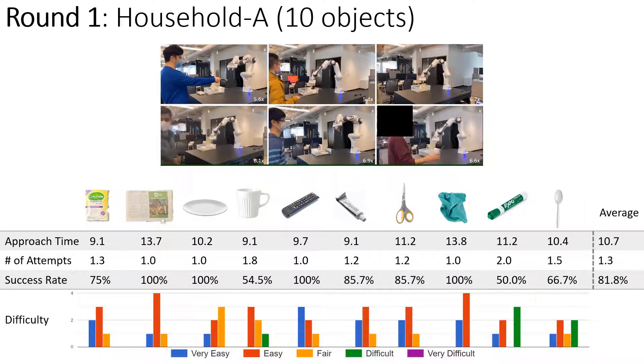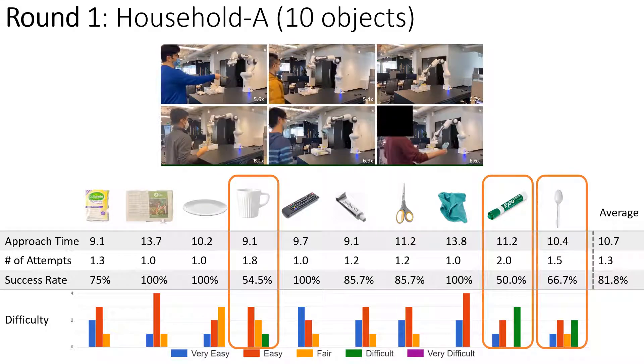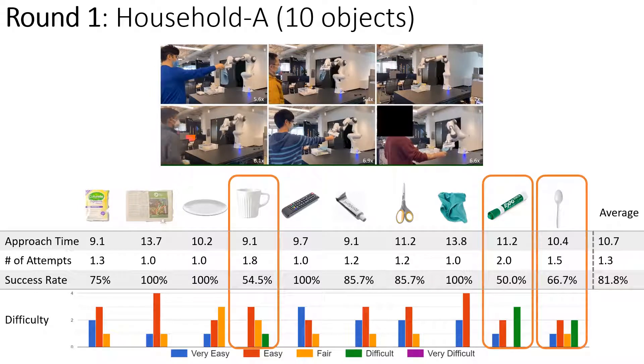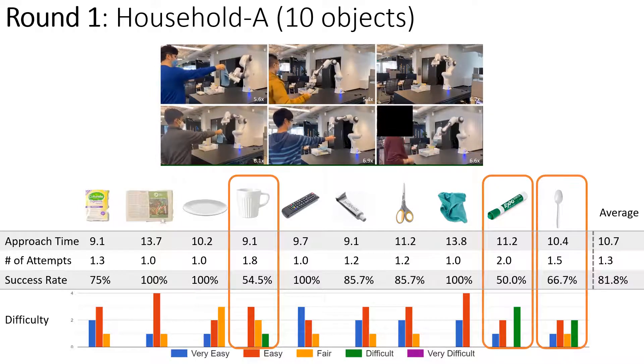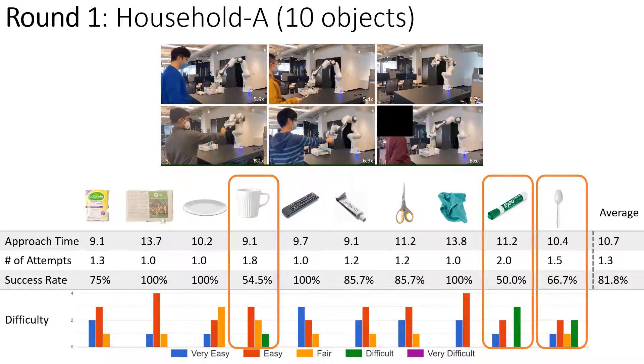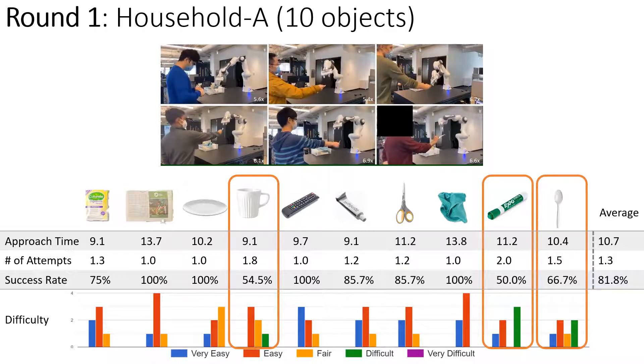Certain objects, such as spoon, pen, and mug, took more trials for a successful grasp. Participants also reported in the questionnaire that these objects were more difficult to hand over. Our system had more difficulty with these objects due to the incomplete and noisy point cloud as a result of their smaller size or complex geometry.